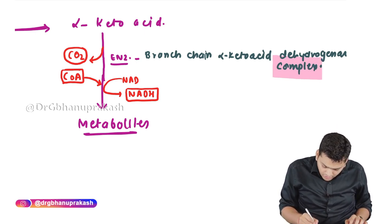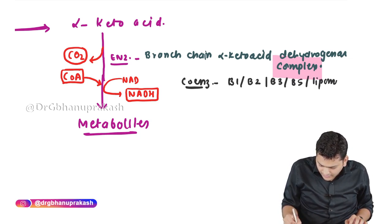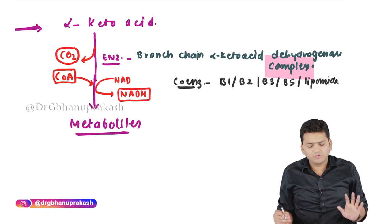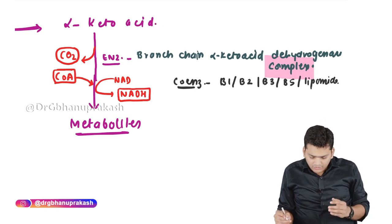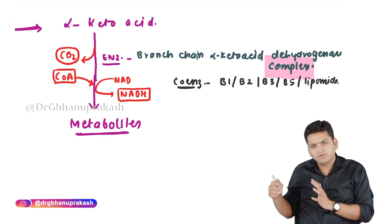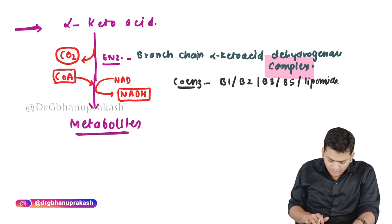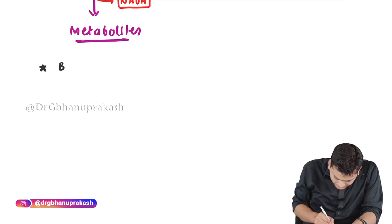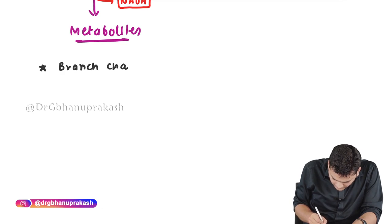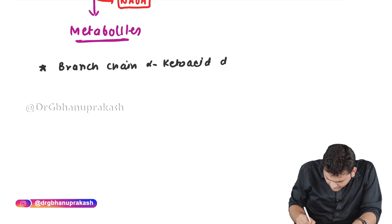The coenzymes required for the branched-chain alpha-keto acid dehydrogenase complex are vitamins B1, B2, B3, B5, and lipoamide. The complex is made up of three subunits: E1, E2, and E3.